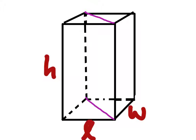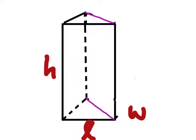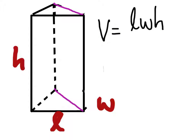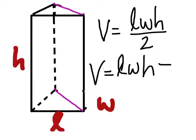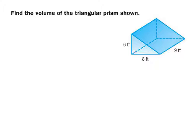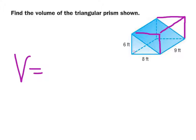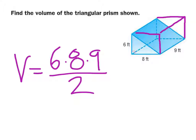Since we sliced a rectangular prism in half, the volume of a triangular prism is just the volume of the rectangular prism divided by two — that is, length times width times height divided by two. For this example, treating it as a full rectangular prism: 6 times 8 times 9 divided by 2 gives us 216 feet cubed.